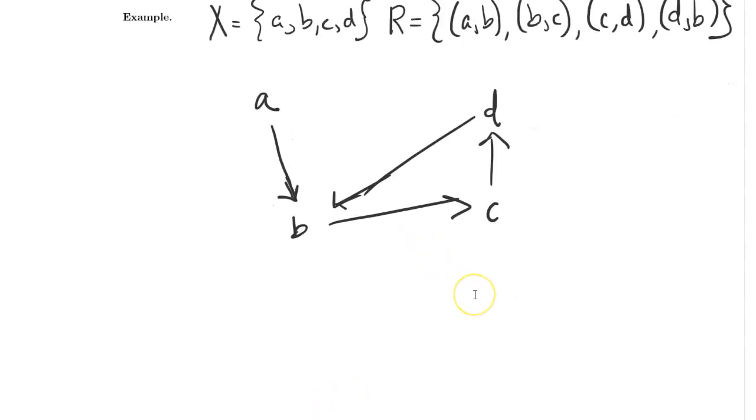We want to make this thing transitive, which means that any time we can eventually get one step at a time between two vertices, we want an arrow directly connecting them. So for example, the fact that we can go from A to B via R and from B to C via R means that via the transitive closure we need to be able to get from A to C.